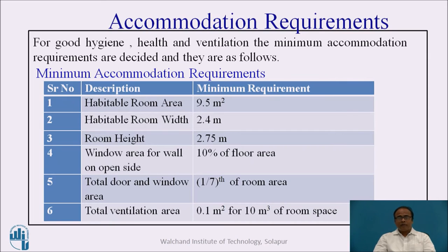Now, accommodation requirements. For good hygiene, health, and ventilation, the minimum accommodation requirements are as follows: habitable room area — 9.5 square meters minimum; habitable room width — 2.4 meters; room height — 2.75 meters; window area for wall on open side — 10% of floor area; total door and window area — 1/7th of the room area; total ventilation area — 0.1 square meters per 10 cubic meters of room space. These guidelines may vary from place to place.